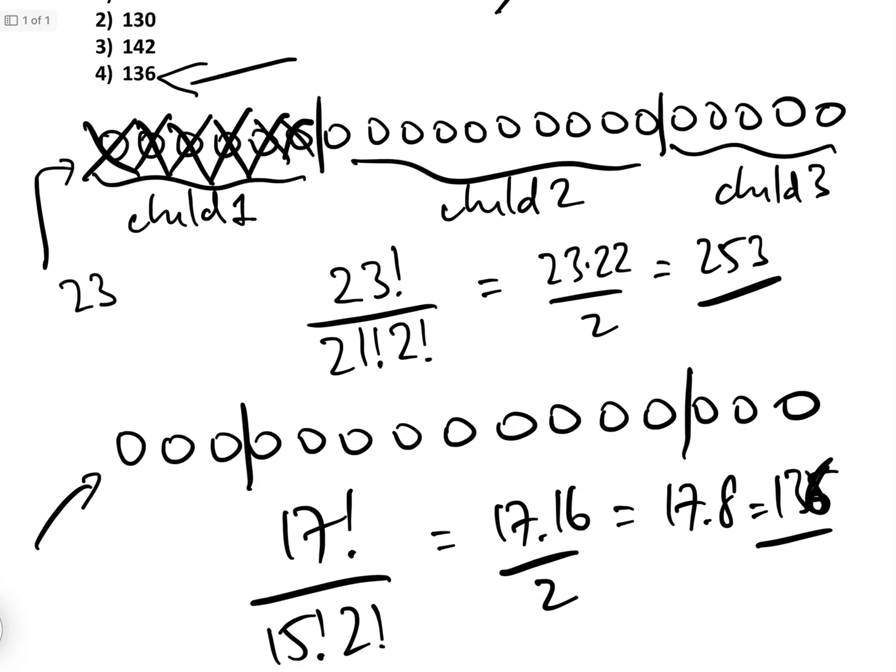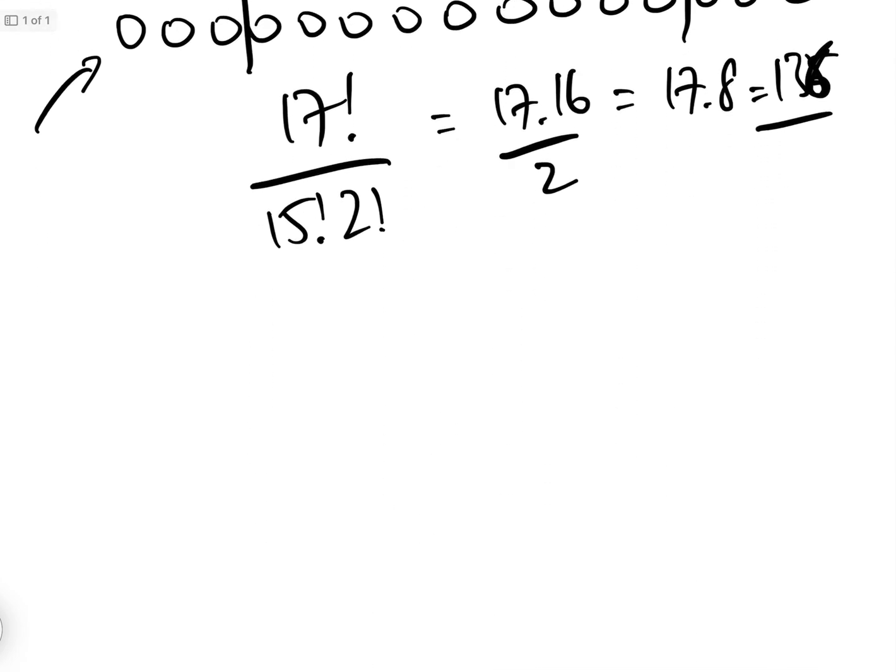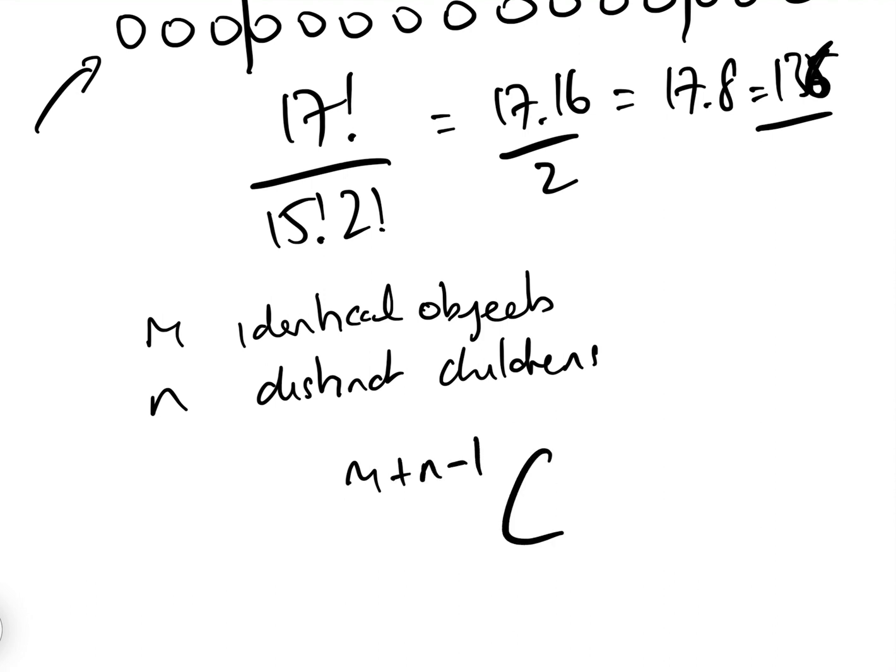And just a matter of interest, the general formula for this, to make you do it even quicker, is if you have M identical objects and you have N distinct children or bins or boxes or whatever, then basically the formula for working out is M plus N minus 1 choose M minus 1.